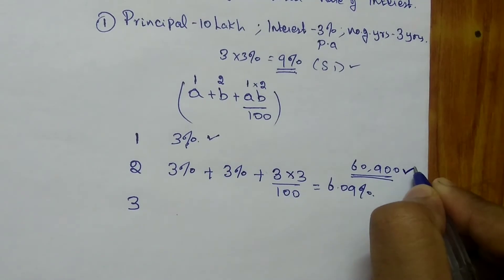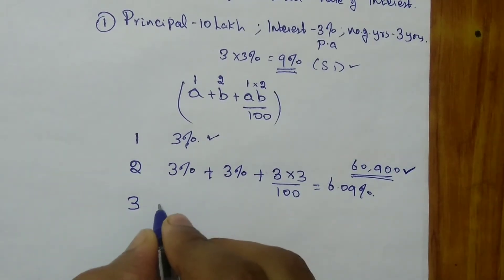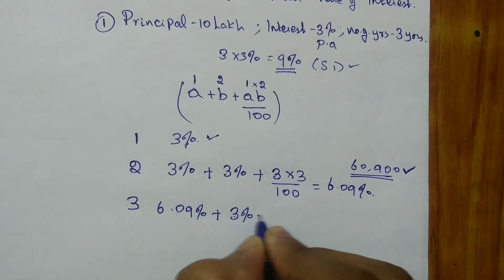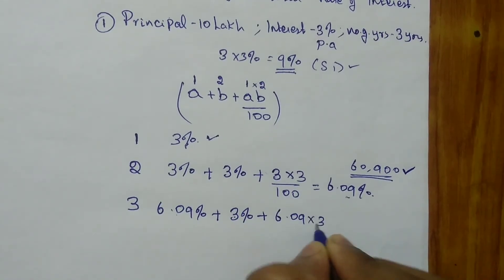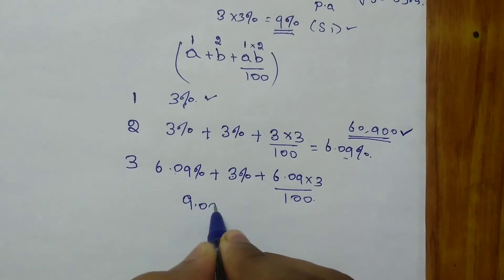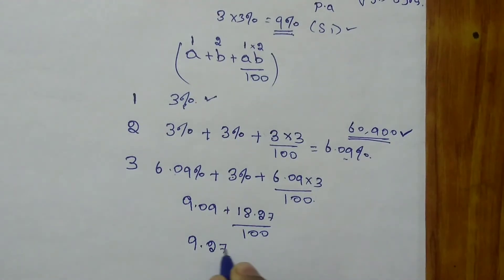So you are planning to settle the complete amount at the end of 3 years. So in third year, the pending amount is 6.09% plus third year also, you will get another 3%, plus for the previous year 6.09%, this year you have to pay another 3%. So 6.09 times 3 by 100. So solving this, you get 6.09 plus 3, 9.09 plus 6.09 times 3 gives you 18.27 by 100. So solving this, you get 9.2727%.